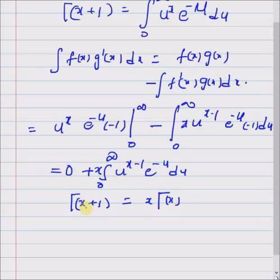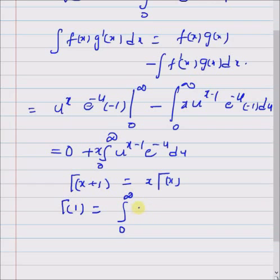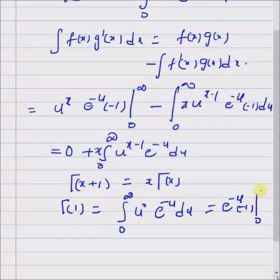Hence the gamma function of an integer x plus 1 is equal to x times gamma(x), where x should be a positive integer. Now, gamma(1) must be computed directly from the definition: integral from 0 to infinity of u^0 times e^(-u) du, which equals e^(-u) times minus 1 evaluated from 0 to infinity, giving 0 minus (minus 1), which equals 1. Hence gamma(1) = 1.